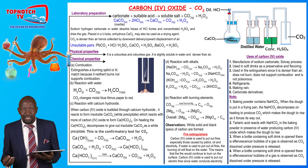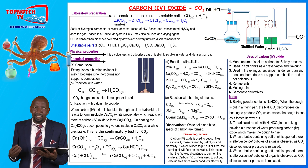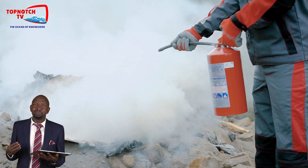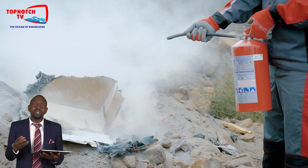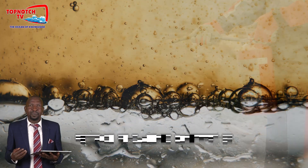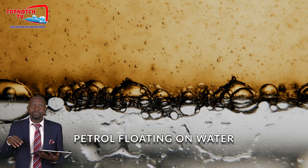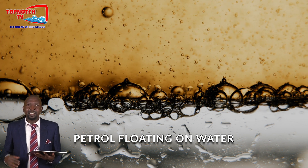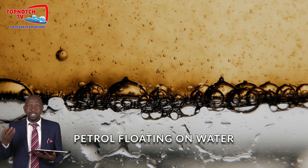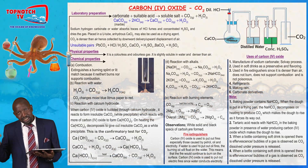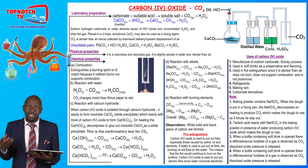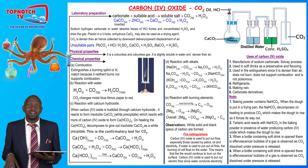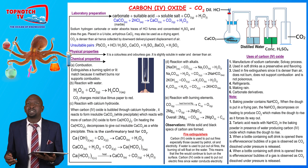The uses of carbon dioxide: it is used in fire extinguishers to put out fires, especially those caused by petrol, oil, and electricity. You cannot use water to put out a petrol fire because petrol is less dense than water — water sinks to the bottom and the petrol floats and continues to burn. Water is also a conductor of electricity, so it cannot be used on electrical fires. But carbon dioxide is denser than air, so it forms a blanket on top of the fire, cutting off the supply of oxygen and thereby putting out the fire.